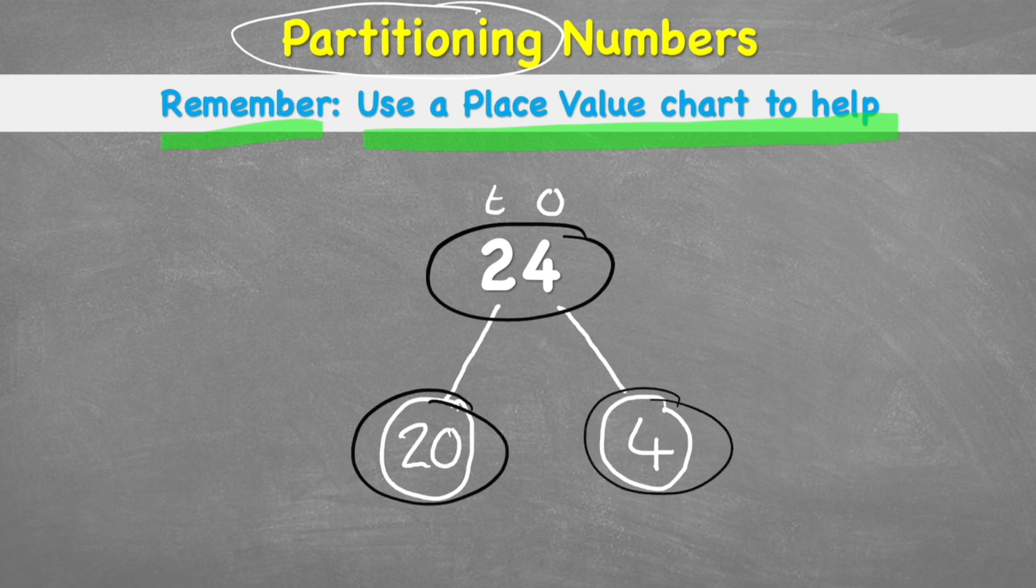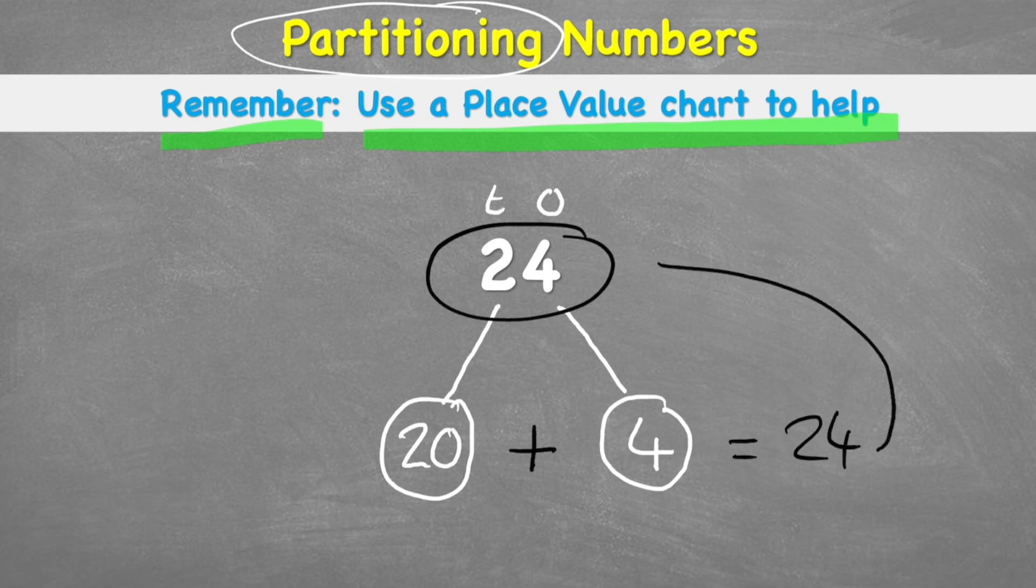Simple, right? And I can always make sure I've partitioned it correctly by just adding these sections back together and see if we get back to the original number. So 20 plus 4 equals 24. And 24 is the same as my original number. So I know I've done that correctly.